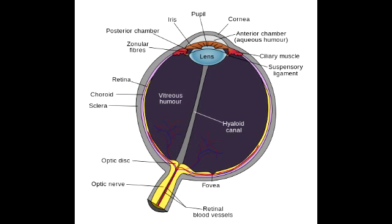Along with that, you also see the hyaloid canal. There is also the optic disc and the fovea centralis. You also see the different layers of the eyeball. The three layers are retina, choroid, and the sclera.